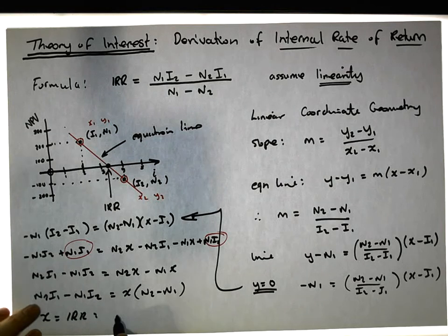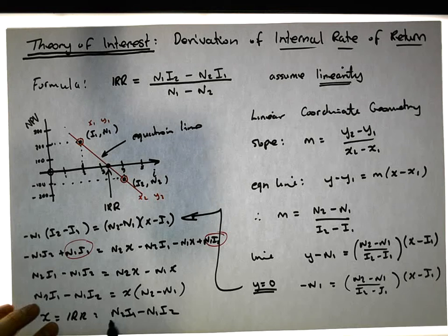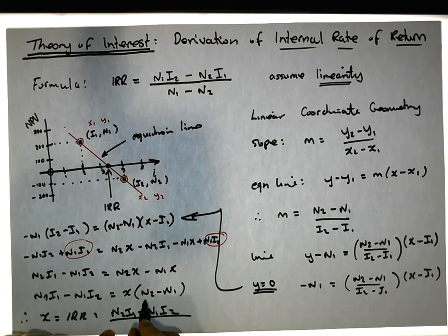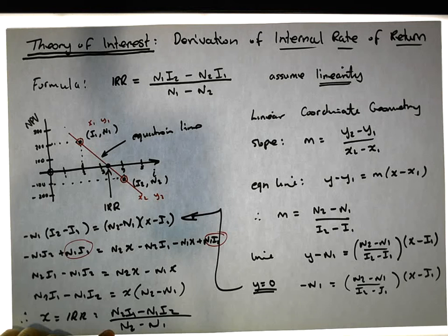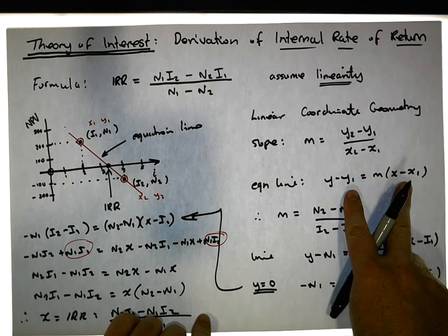Must be equal to n2 i1 minus n1 i2, all over n2 minus n1. The key thing here is that we've assumed linearity. We've assumed a straight line going through these two points.